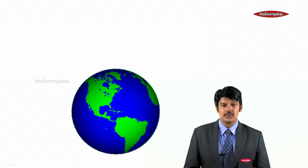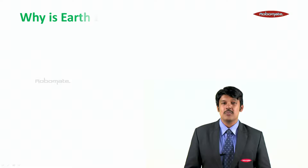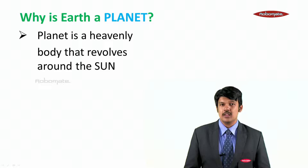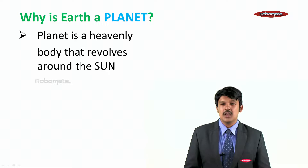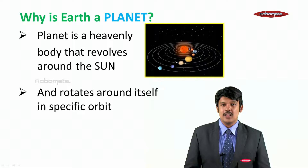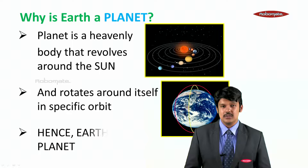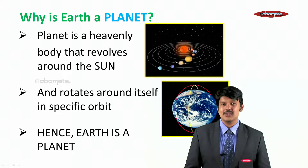Let us now learn about our Earth. We know this is how Earth looks. Now let us understand why Earth is called a planet. A planet is a heavenly body that revolves around the sun and rotates about itself in a specific orbit. Our Earth rotates about itself in a specific orbit — hence, Earth is a planet.